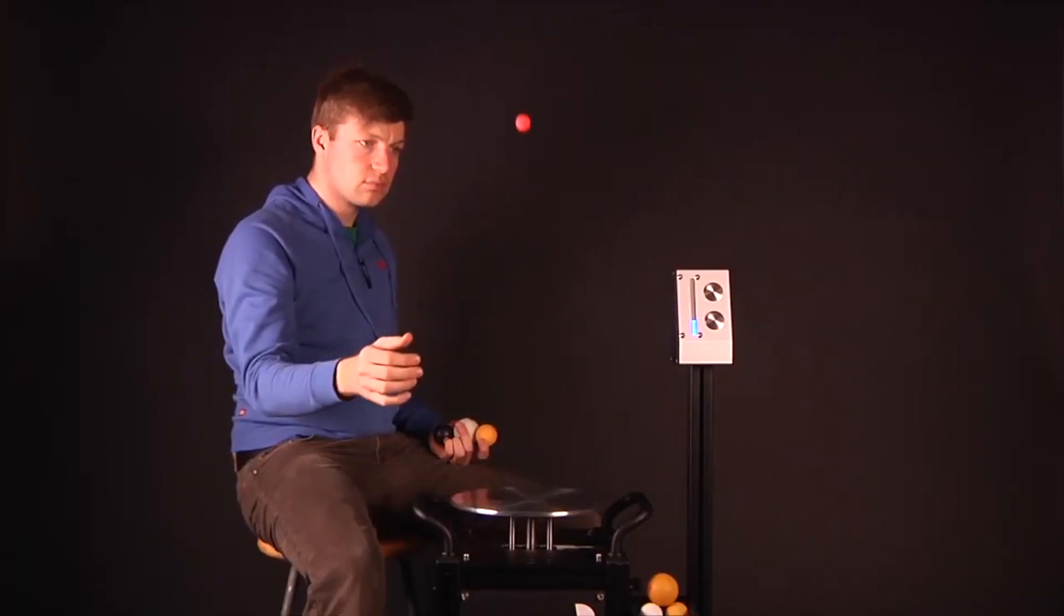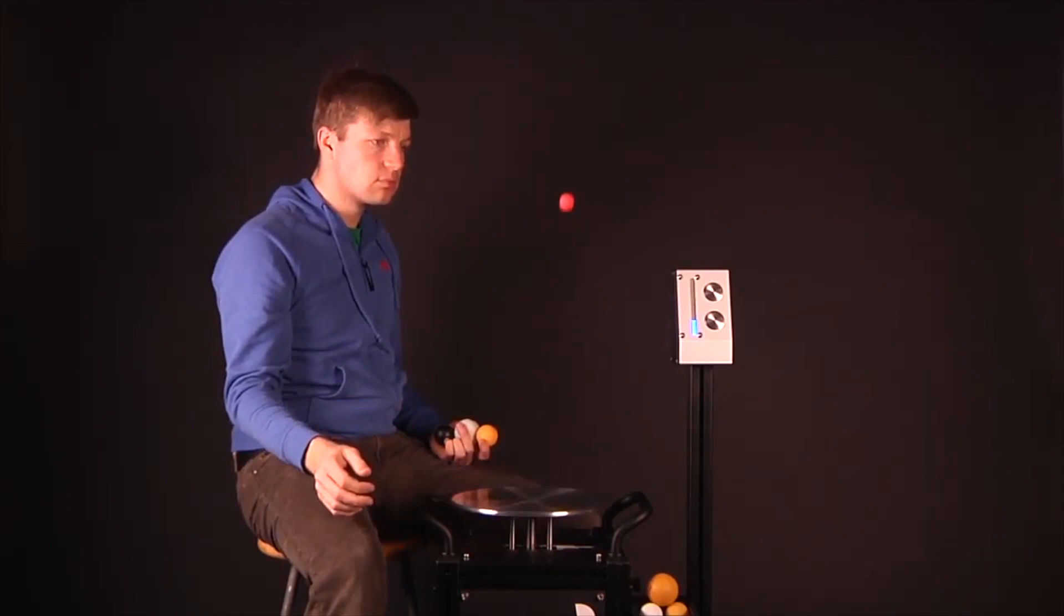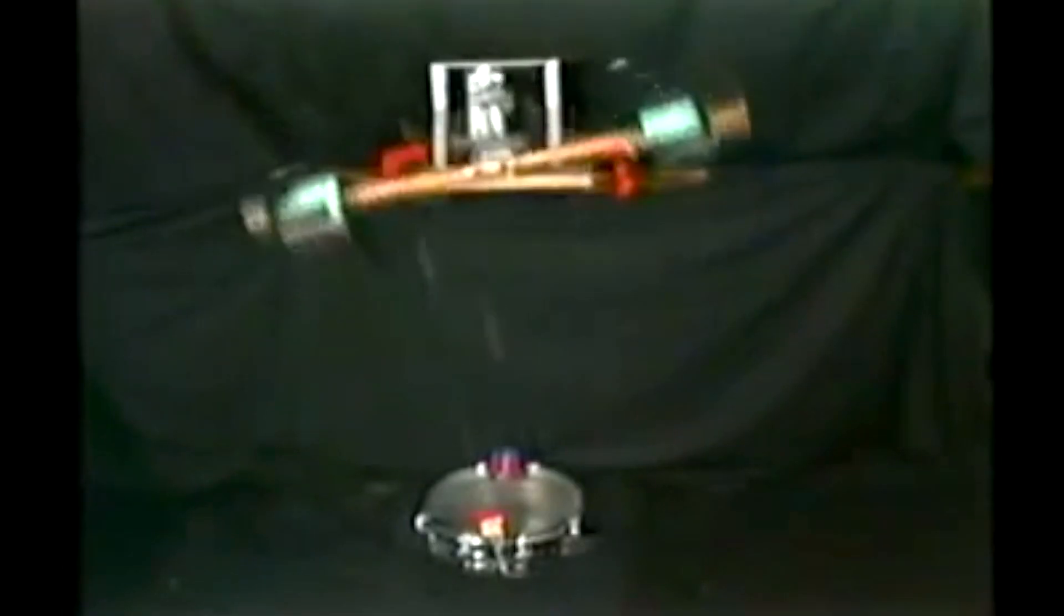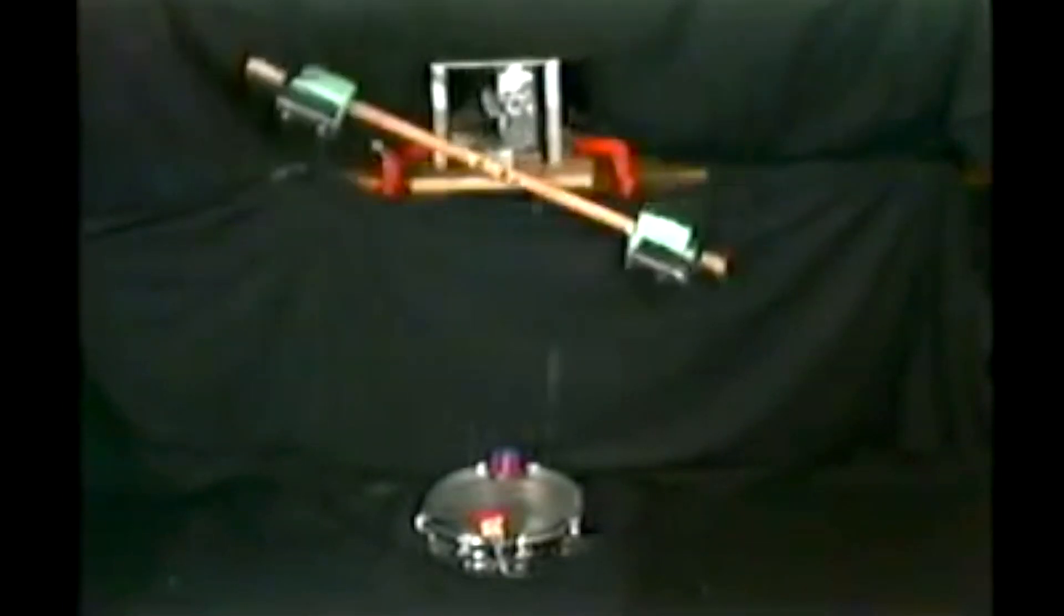Bouncing automata are also self-correcting without any ongoing control, both in bounce height and directions. That's not to say the automata aren't capable of advanced juggling. How about a five ball bounce cascade?